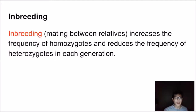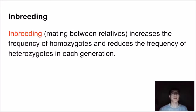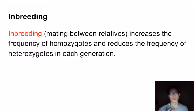Inbreeding is just mating between relatives. It increases the frequency of homozygotes and reduces the frequency of heterozygotes in each generation. So effectively, you increase the frequency of homozygotes at the expense of heterozygotes in the population we're talking about.